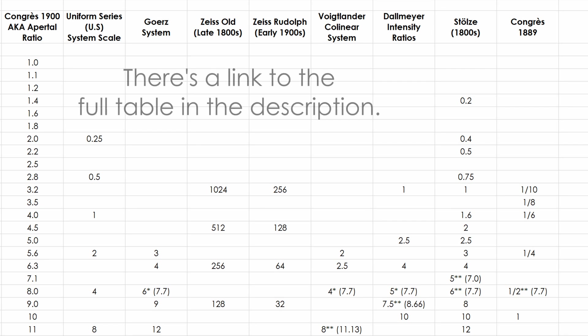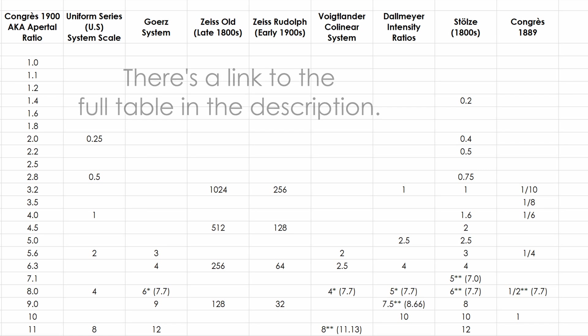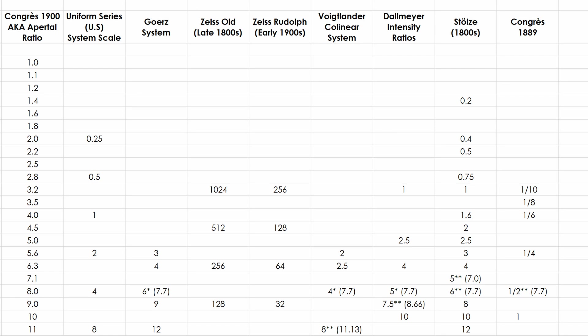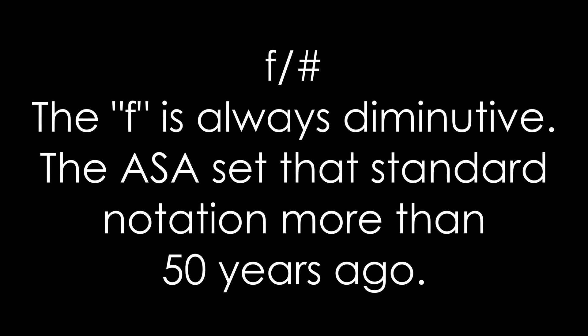When that system was released, there were many competing systems. There's a link in the video description to a table I put together comparing many of the historical systems. Some very old lenses can still be found with aperture numbers that do not align with modern notations — I have two lenses like that, and it really messed up some images when I first started using them. The system we've been using is, as of this recording, 123 years old. Another fun fact: always write your f-stop notation with a diminutive lowercase letter F. The American Standardization Association standardized the lowercase F notation in 1961, and that rule still stands today.